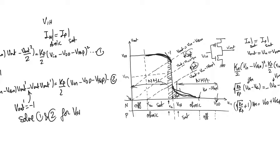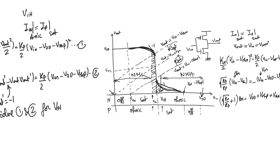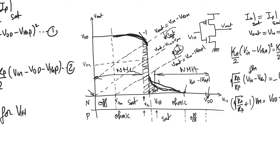We end up with a value of V-input-high that is rather low and a value for V-input-low that is rather high — both close to Vm — which means the transition region is narrow. And finally, we can prove that the noise margins for CMOS are excellent, better than ratioed logic and in fact better than any logic family we can think of.